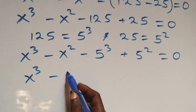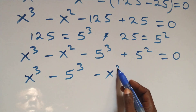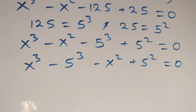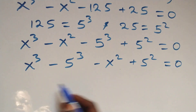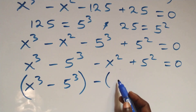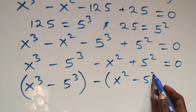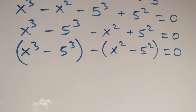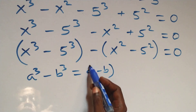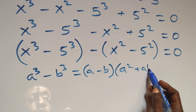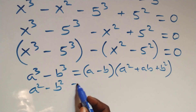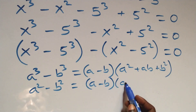The next step, we bring the power of 3 terms together: x cubed minus 5 cubed, and the power of 2 terms together: minus x squared plus 5 squared, equals 0. This gives us x cubed minus 5 cubed, minus bracket x squared minus 5 squared, equals 0. The first bracket follows the identity: a cubed minus b cubed equals a minus b, times bracket a squared plus ab plus b squared. The second bracket follows a squared minus b squared equals a minus b times bracket a plus b.